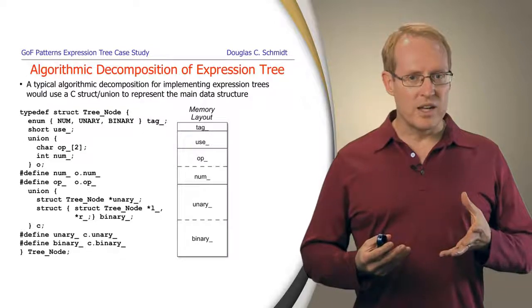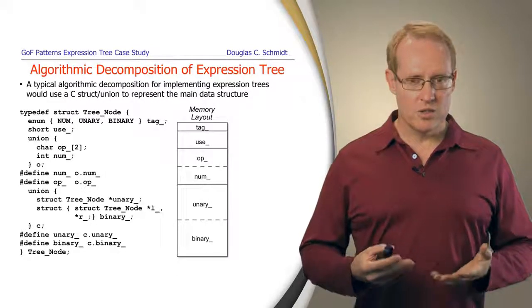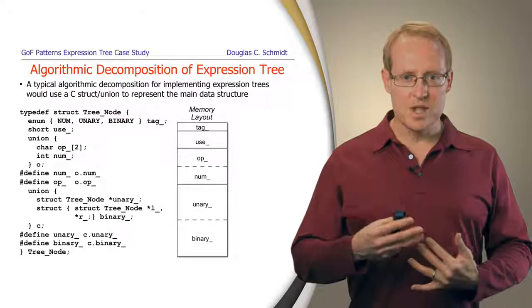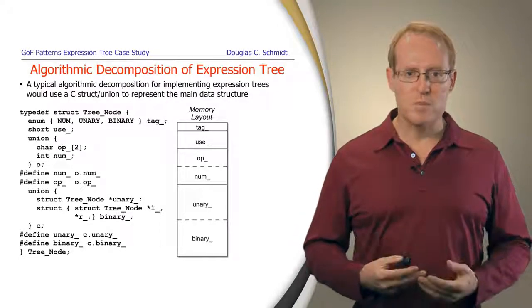Here's a diagram that illustrates the layout of this particular tree node when it's instantiated in memory, and you can see how the use of unions helps to conserve the total amount of space that's used.